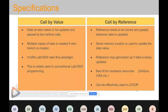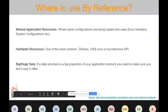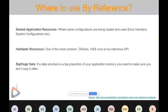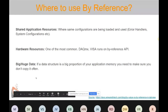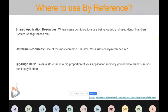Call by reference is useful in several scenarios: shared resources used in many places in an application, such as configuration data; hardware resources like DAQmx or VISA; and large chunks of data — for example, a big cluster accessed or modified in many places. Every time you create a wire branch for a large cluster, a copy is created, buffer allocations increase, and memory optimization suffers. In these cases, use call by reference — provide a reference, then read and update all values from that reference.